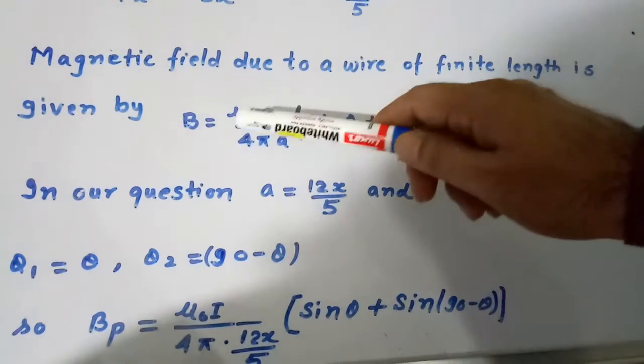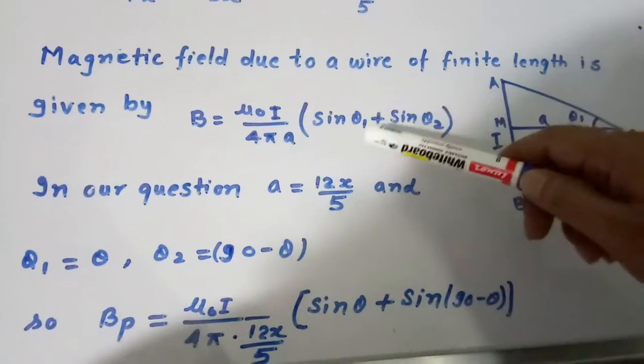So this is the formula that B equal to μ₀I divided by 4πA times sin θ₁ plus sin θ₂. In our case the same thing we have to evaluate.